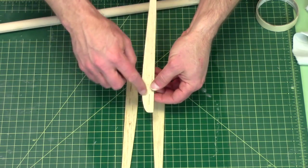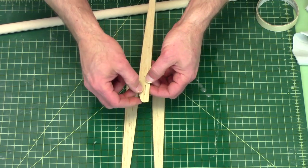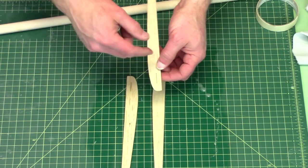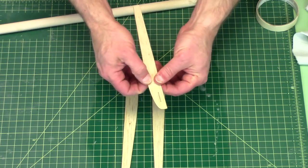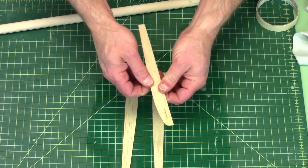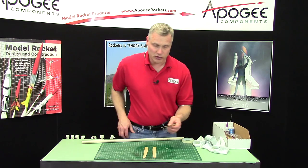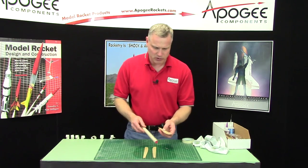You'll notice on my balsa wood that I've left the little tabs in. You can pop those out if you want, it doesn't matter at this point. The longer you leave it in the solution the more flexible it's going to be.